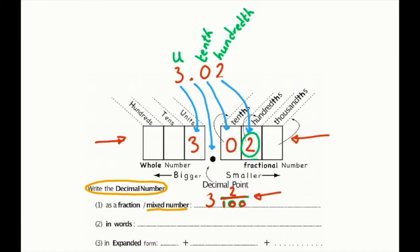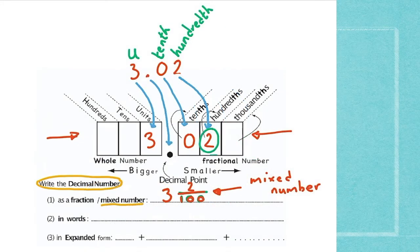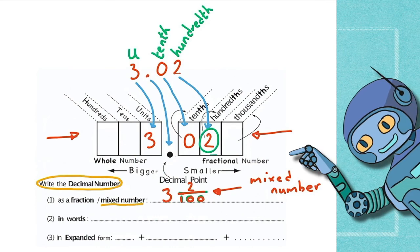So this is one way to change a decimal number into a mixed number, am I right? Yes, that's correct. Perfect.